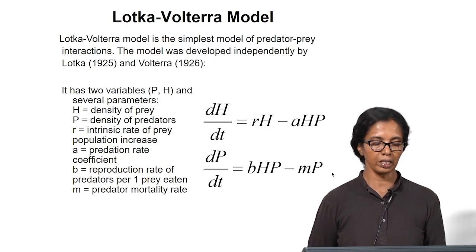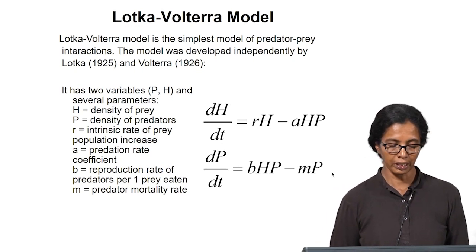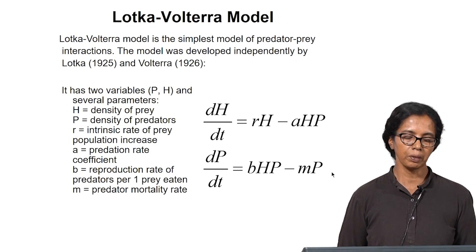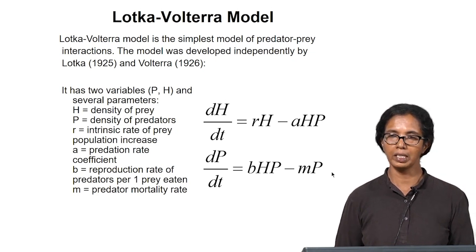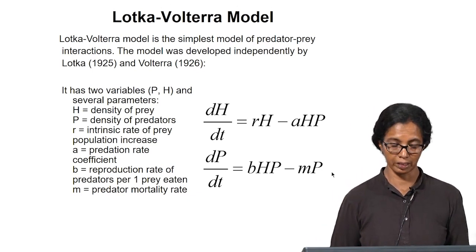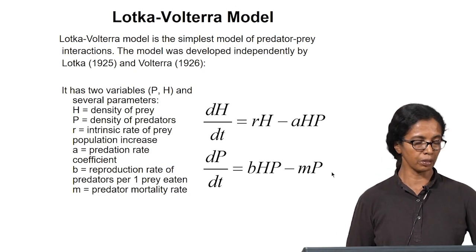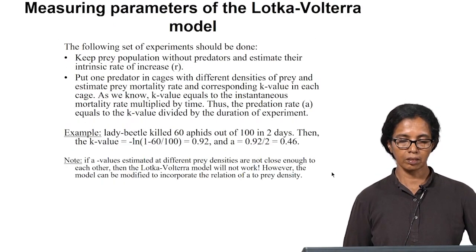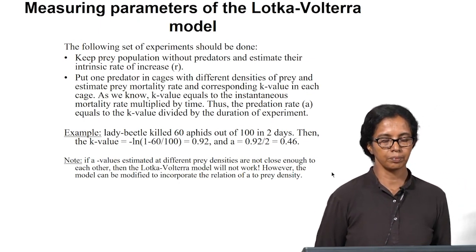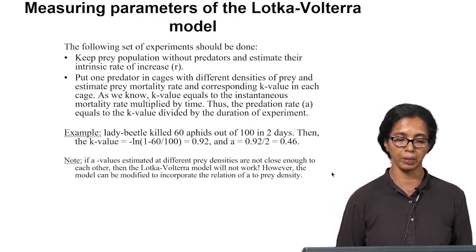b is the reproduction rate of predators per one prey eaten, which dictates how many predators there will be. dp/dt is the rate of increase of the predator by eating the prey. m is the mortality rate of the predator. These two equations are used for defining interspecific competition or the interaction between a prey-predator population.